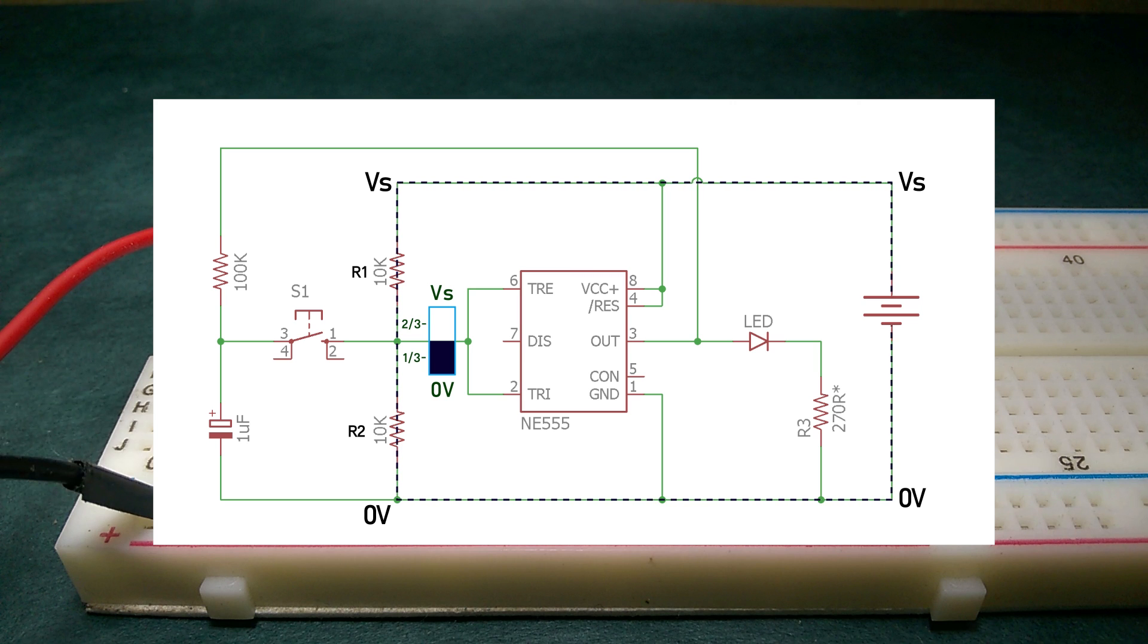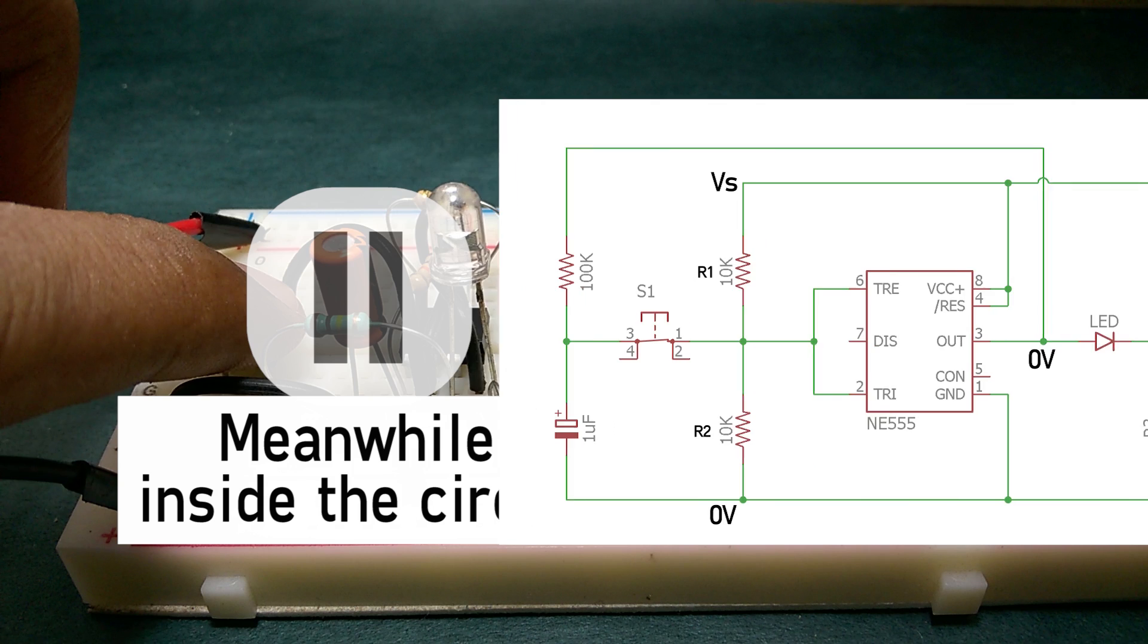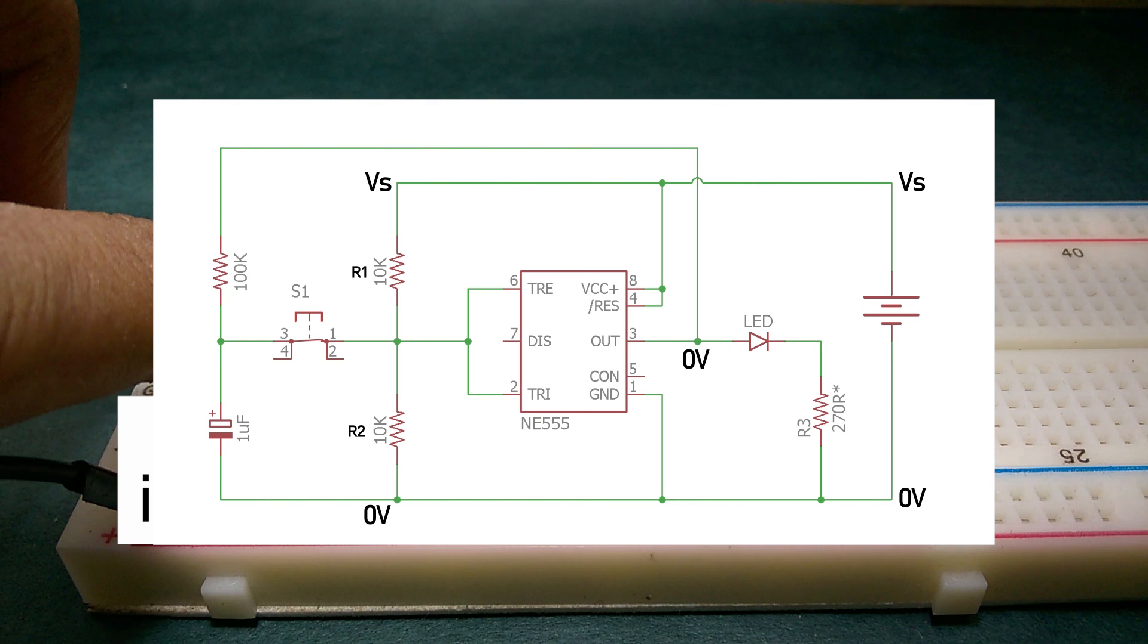Now when the push button is pressed, the capacitor starts getting charged by drawing in current through R1. So because of increase in flow of current through R1, the voltage drop also increases which causes the voltage at pin 2 to go below one-third of the supply voltage and so the output turns on.